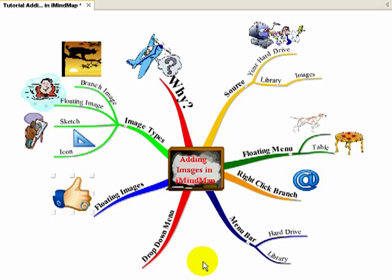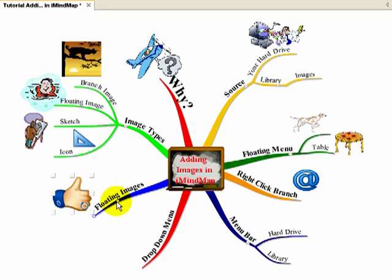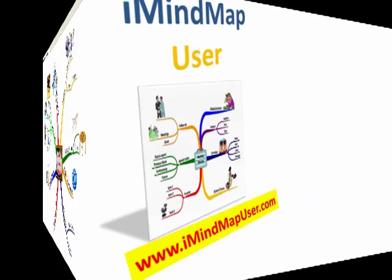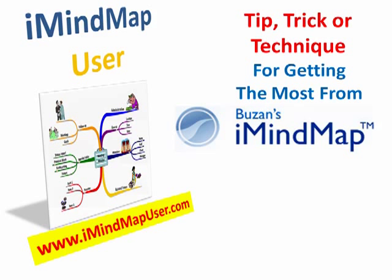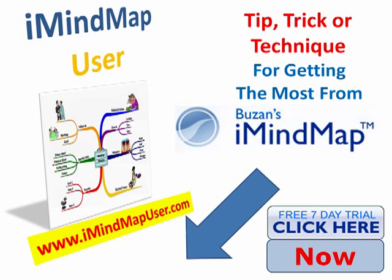So very quickly, that's just how we can add images. There are different types of images, and you can get them from different parts of either your computer or within the software itself. You can use the floating menu, you can right-click the branch, you can use the main menu bar, or you can use the drop-down menu. And you can add floating images if you don't want your image associated with a branch. I hope you've enjoyed that, and I look forward to sharing more about iMindmap in another video. If you don't have a copy of the software, simply click on the link below this video to get your free 7-day trial.